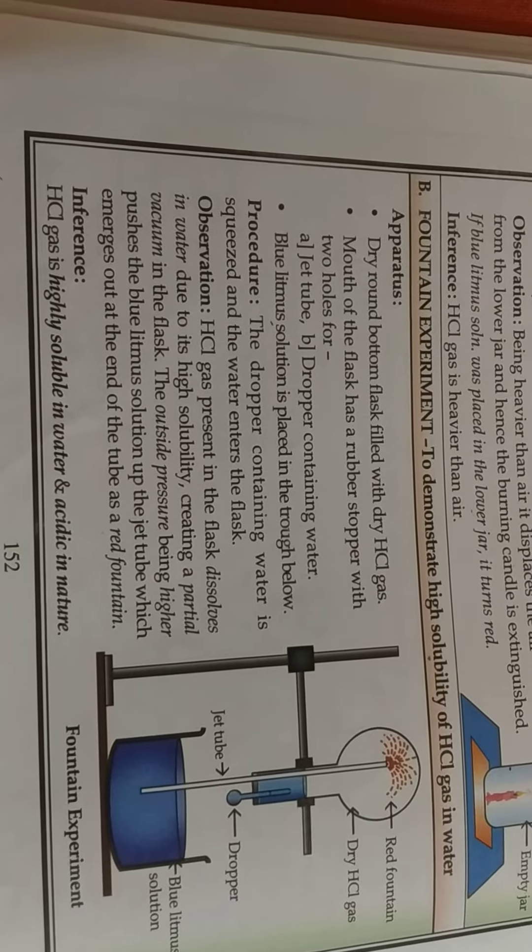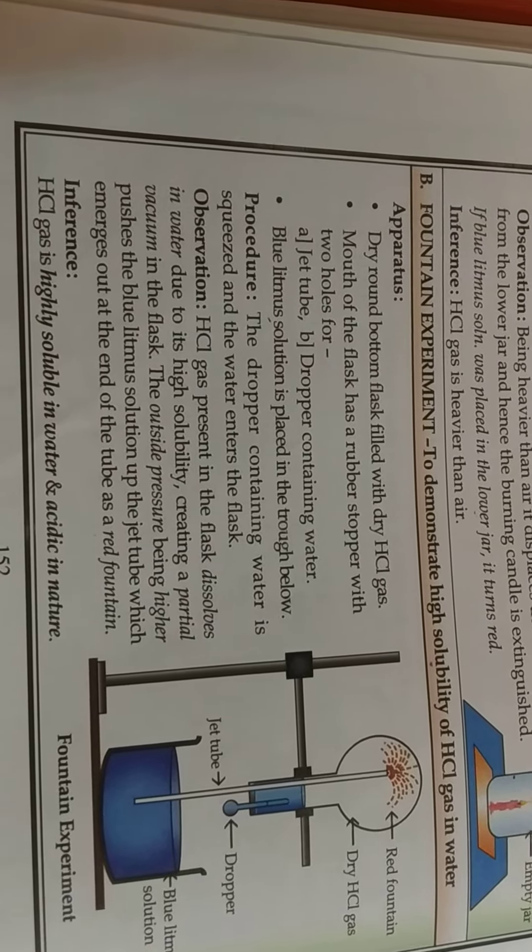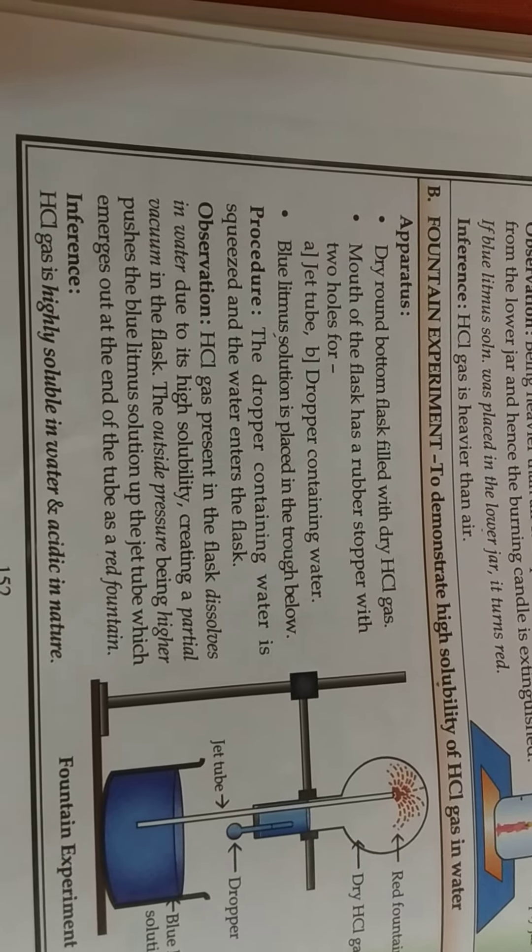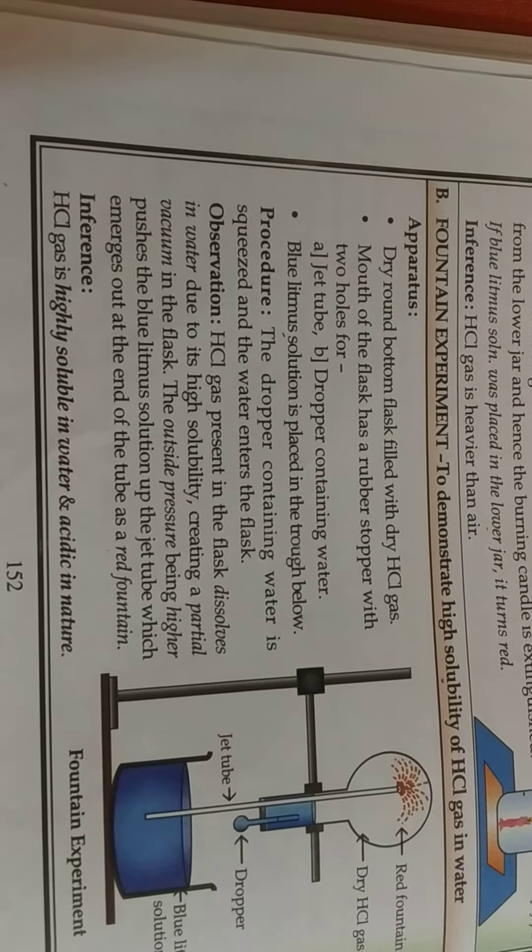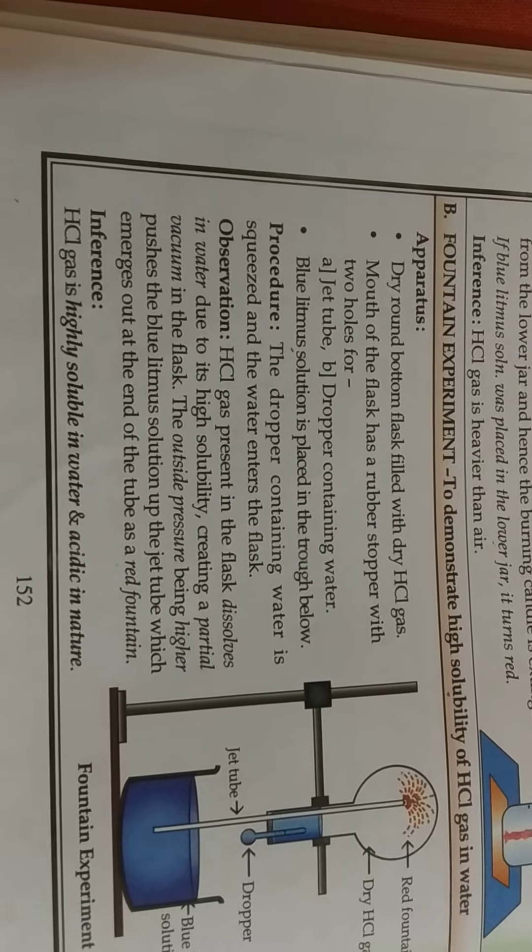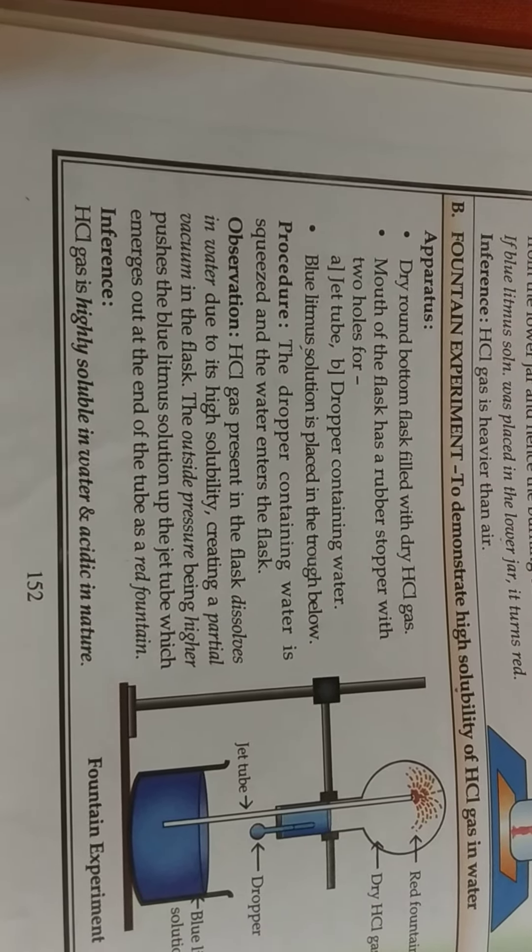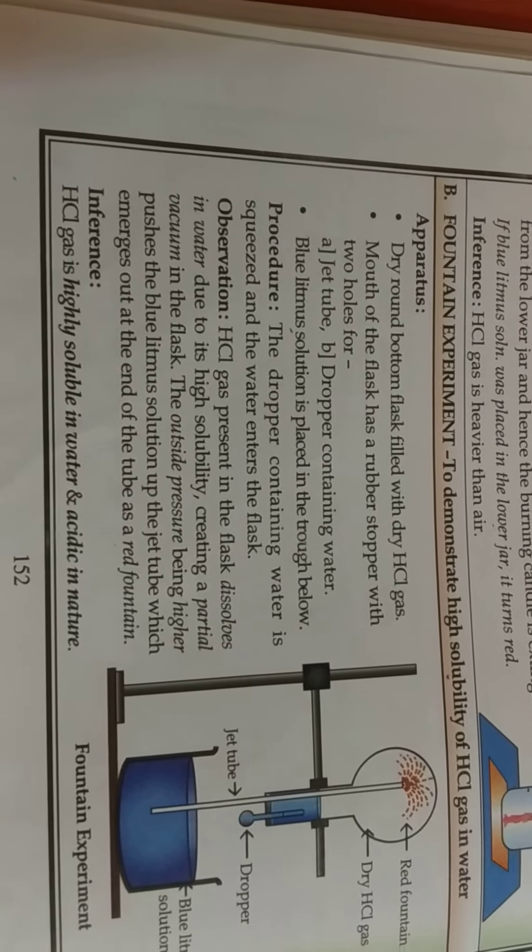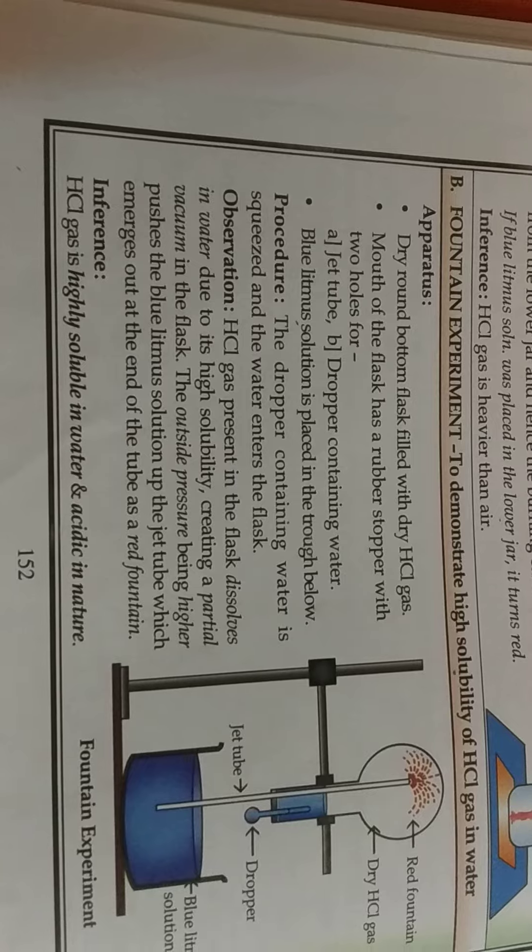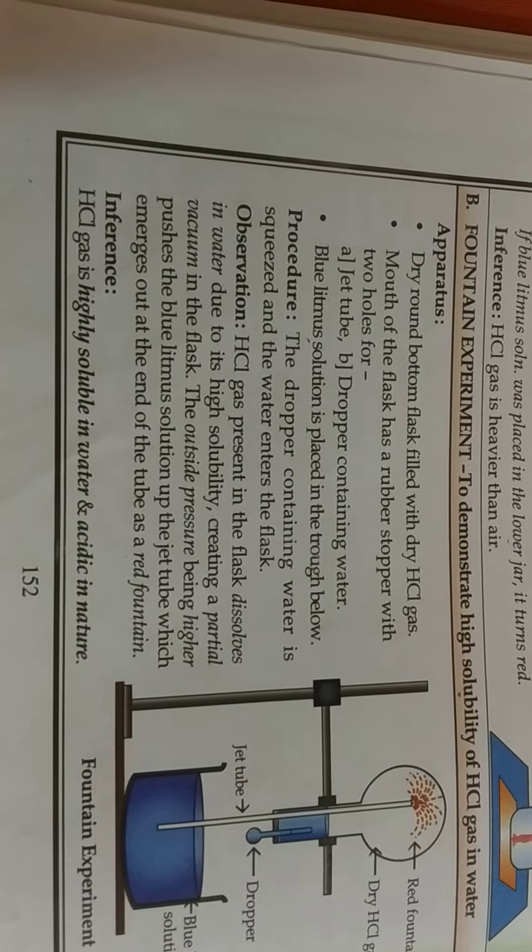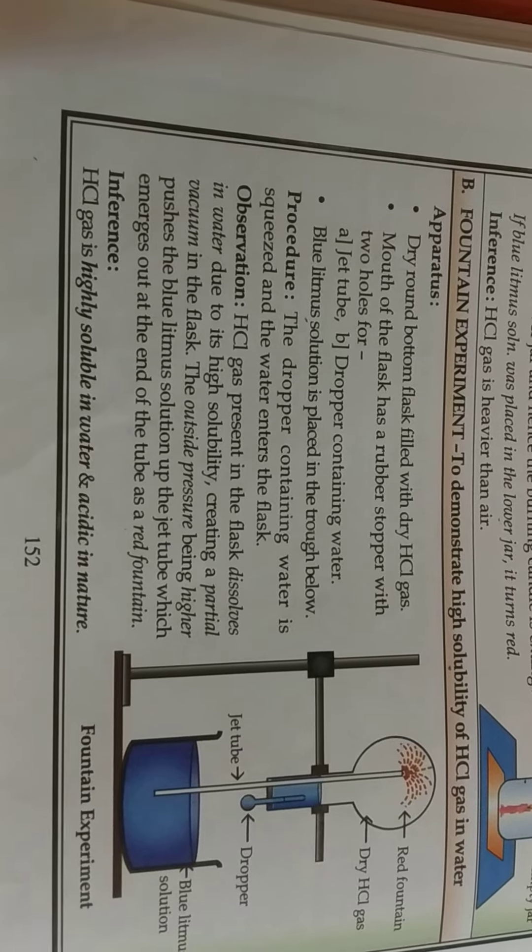The dropper containing water is squeezed and the water enters the flask which is already filled with dry HCl gas. As soon as the water comes in contact with the dry HCl gas present in the round bottom flask, the reaction will take place and through the jet tube the blue litmus solution will enter the round bottom flask.